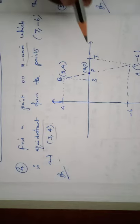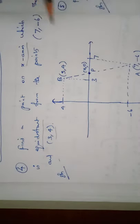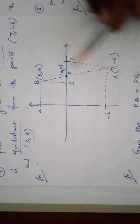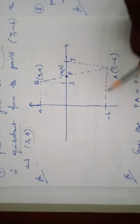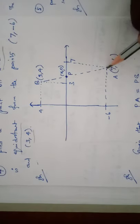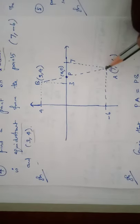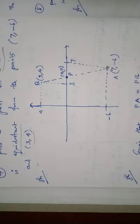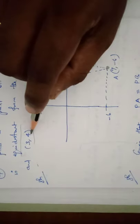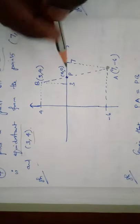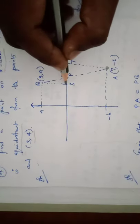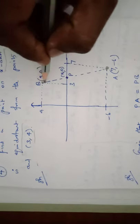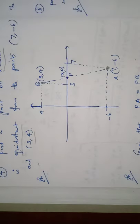First we draw point A at (7, -6), so x equals 7 and y equals minus 6. This is the first point A. The second point B is (3, 4), so x equals 3 and y equals 4.